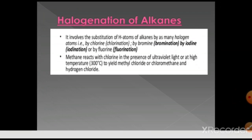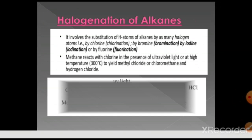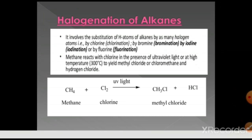Halogenation of alkanes is the substitution of hydrogen atoms by halogen atoms. If substituted by chlorine, it is chlorination; by bromine, bromination; by iodine, iodination; by fluorine, fluorination. For example, methane reacts with chlorine in the presence of UV light to give methyl chloride and HCl. The mechanism is a free radical mechanism involving three steps, and ultimately all hydrogens can be replaced by halogen atoms.